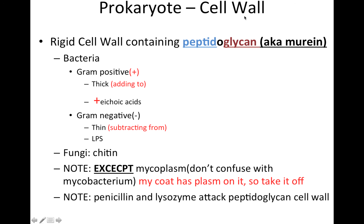Now we're going to take a look at the cell wall. The cell wall is an important characteristic of prokaryotes. It is rigid and contains something called peptidoglycan — which has a peptide and a glycan part, so a protein and a sugar part. When you're taking practice tests or studying, you might see it designated as murein. Those two names are synonymous with each other.